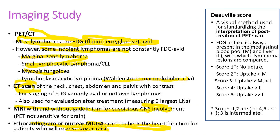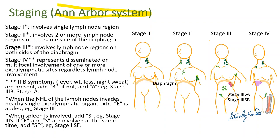PET scans use the Deauville scoring system to assess response to treatment. They have a score of 1 to 5: scores 1 to 3 are negative, and 4 to 5 are positive.